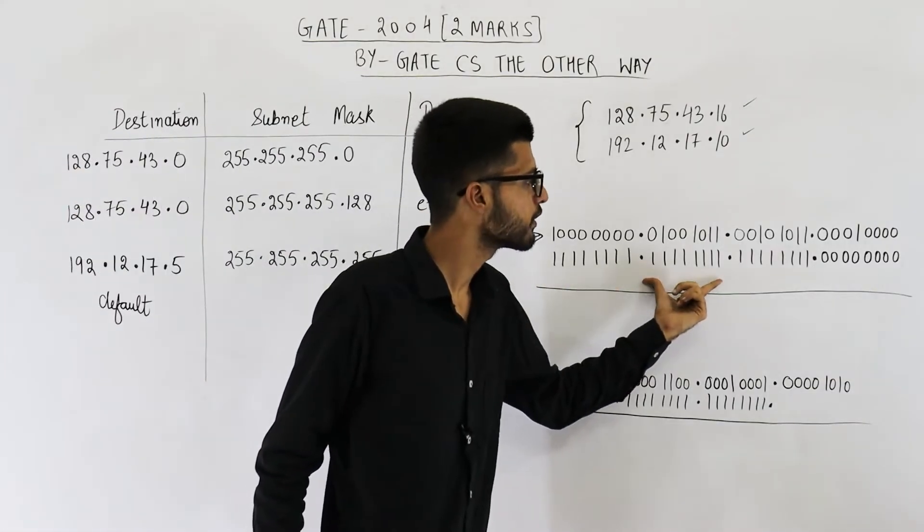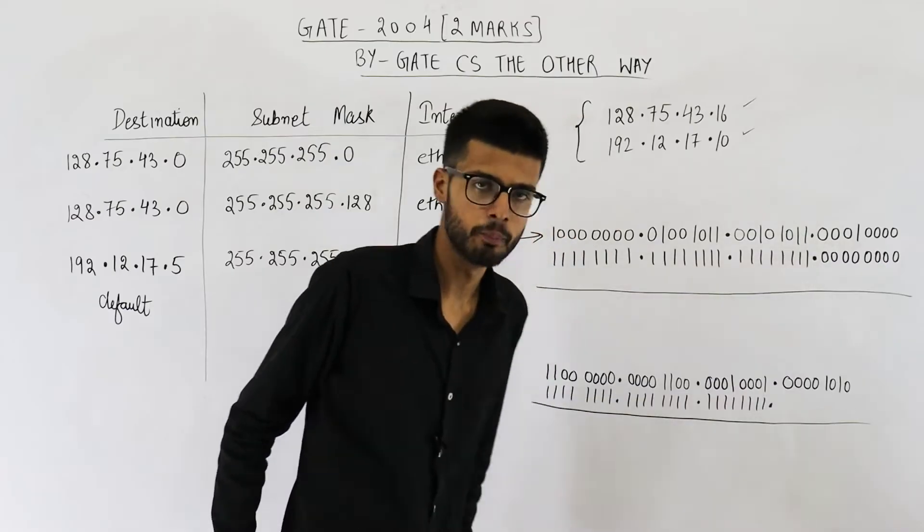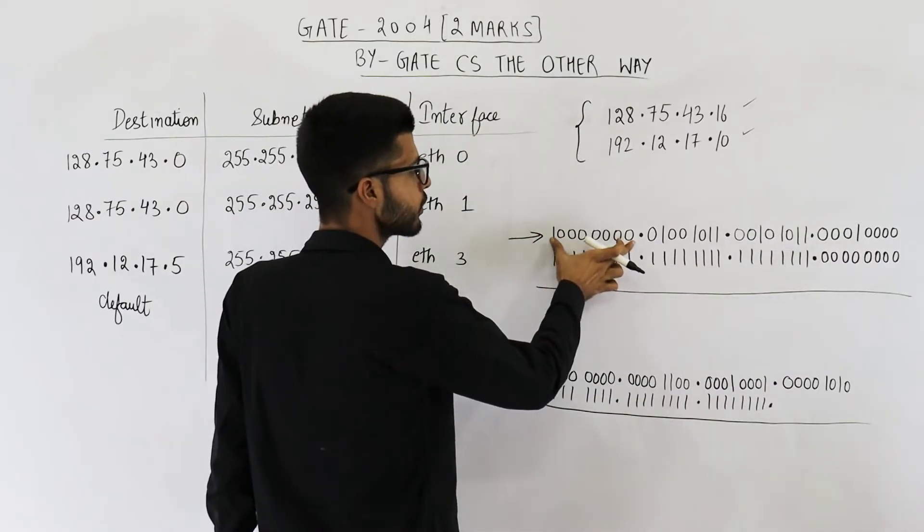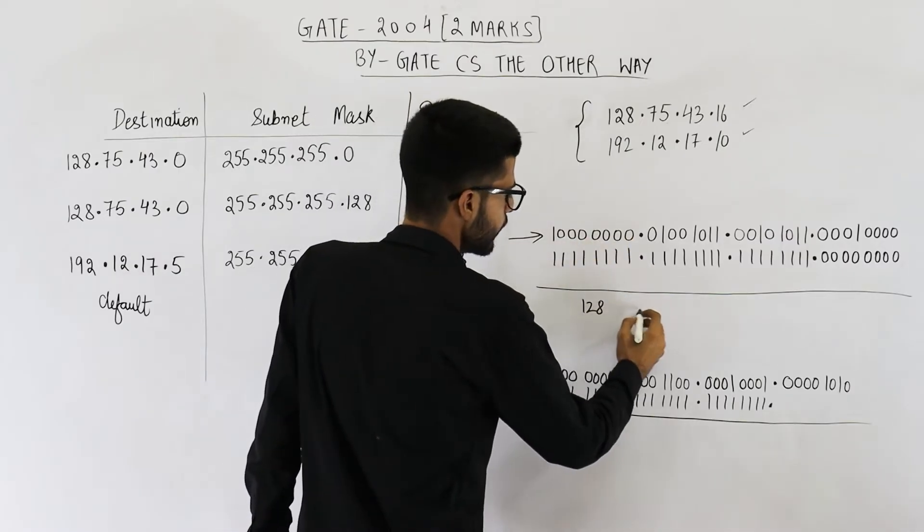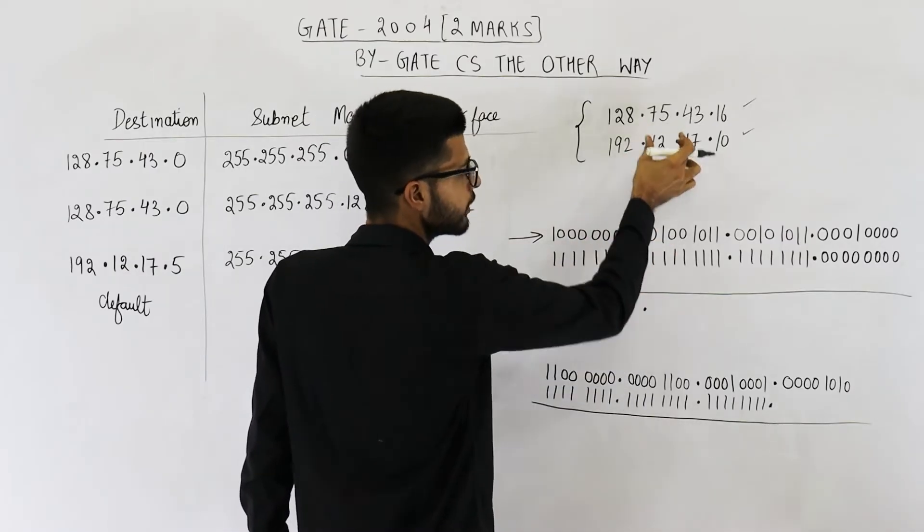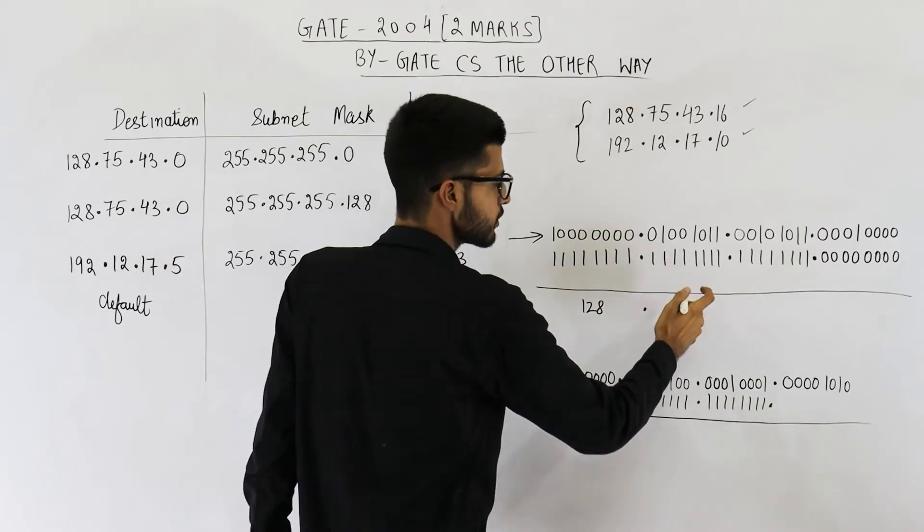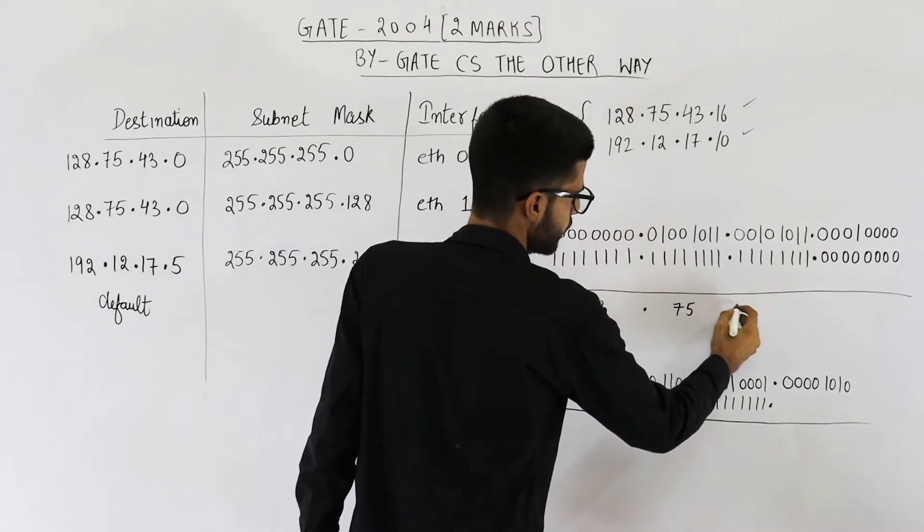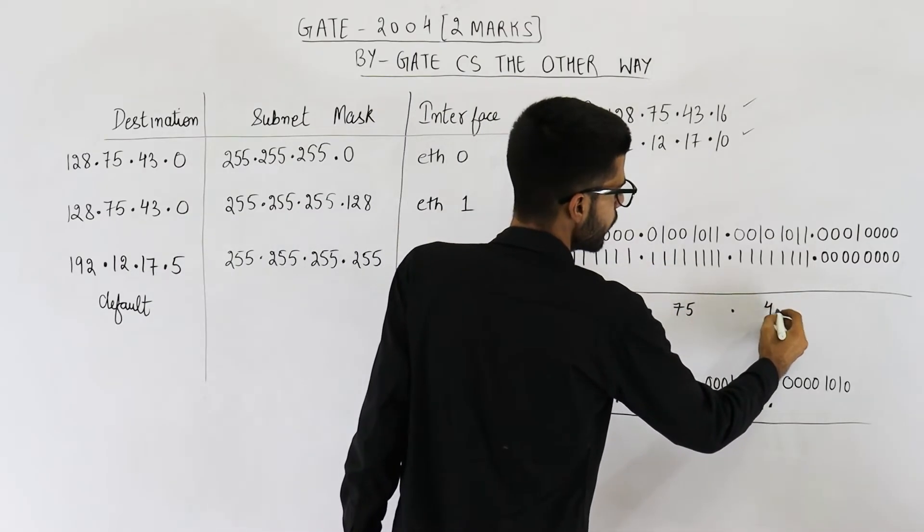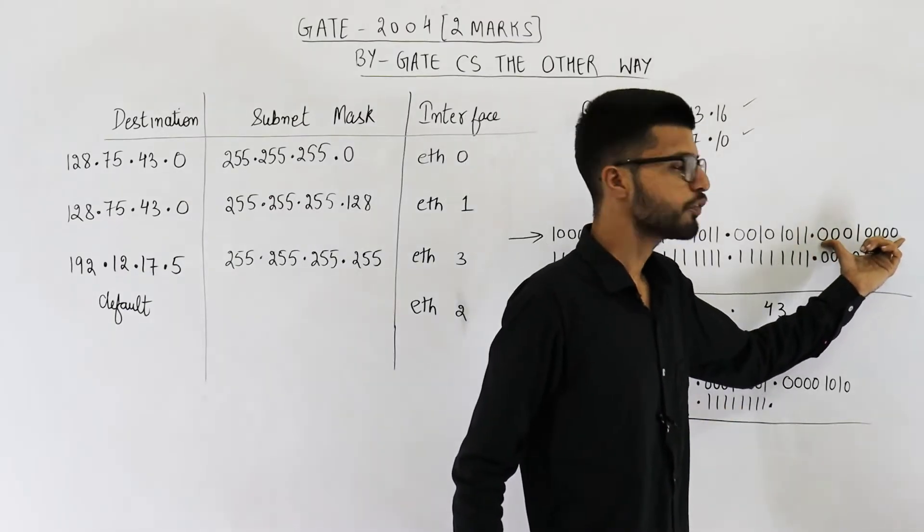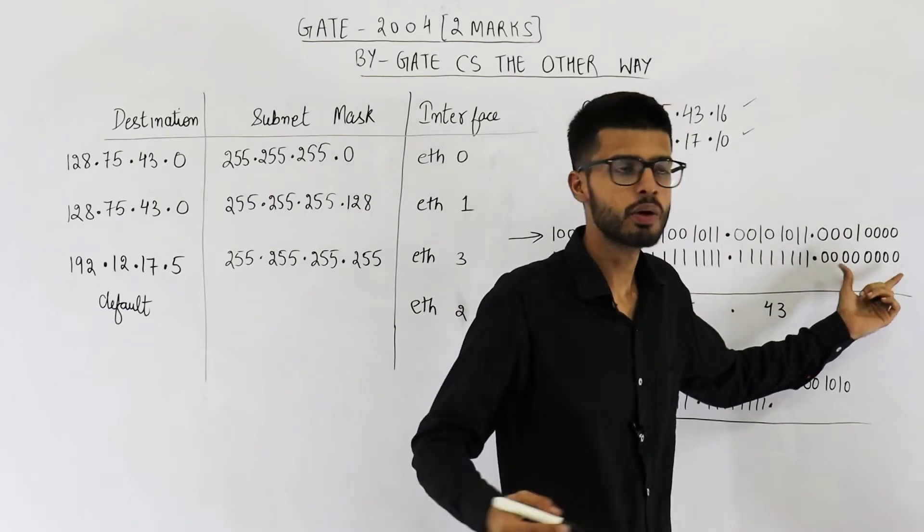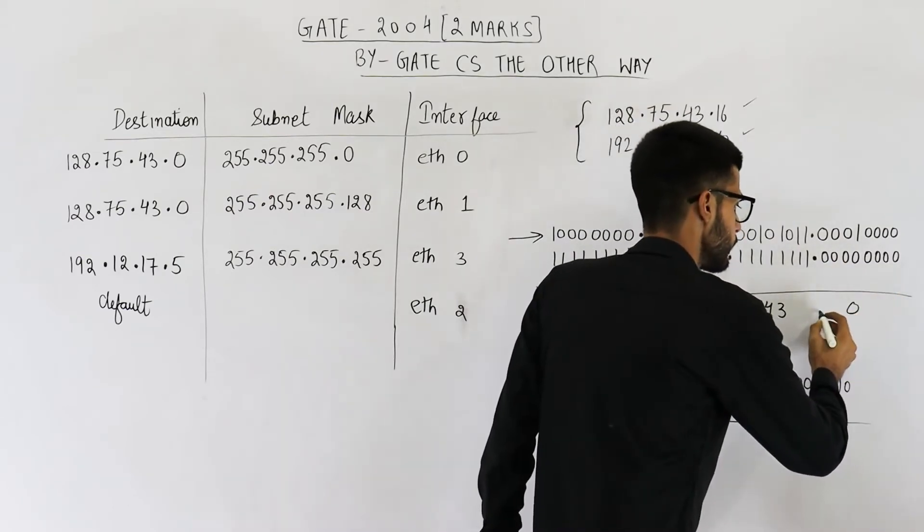So this is all three octets are ones. Then the last octet is zeros. So 255.255.255.0. When you perform AND with all ones, you are going to get this number only. So this is 128. Again, when any number is ANDed with all ones, you are going to get that number only. Here also, you are going to get 43 only. When you perform AND of any number with all zeros, you are going to get 0.